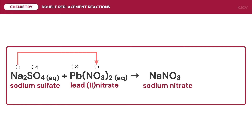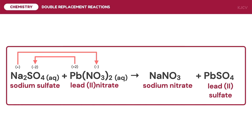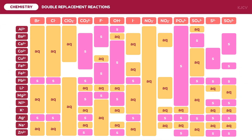On the other hand, lead will bond with the sulfate ion to form lead(II) sulfate. Another method in determining the products is to combine the names of the ions and from there write the formula for the compounds. We are now going to determine which between the two compounds will exist as a precipitate. For sodium nitrate, we have the sodium cation and the nitrate anion. The intersection of these ions indicates that it is soluble or aqueous.